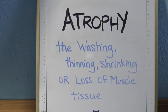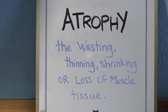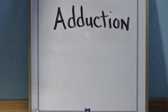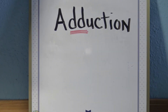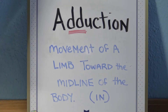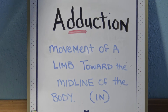Atrophy — muscle atrophy is the thinning, loss, or shrinking of muscle tissue, usually from lack of use. So it is a lessening of tissue. Adduction — adduction is the movement of your limbs towards the midline of your body, so you're pulling in towards you.